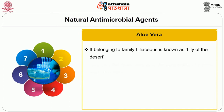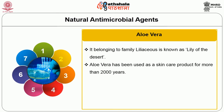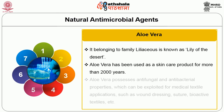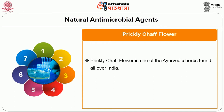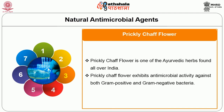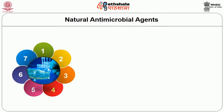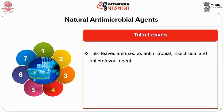Aloe vera, belonging to family Liliaceae, is known as the lily of the desert. Aloe vera has been used as a skin care product for more than 2000 years. It possesses antifungal and antibacterial properties which can be exploited for medical textile applications such as wound dressing, suture and bioactive textiles. Prickly chaff flower is one of the ayurvedic herbs found all over India and exhibits antimicrobial activity against both gram-positive and gram-negative bacteria. Tulsi leaves are used as antimicrobial, insecticidal and antiprotozoal agents.